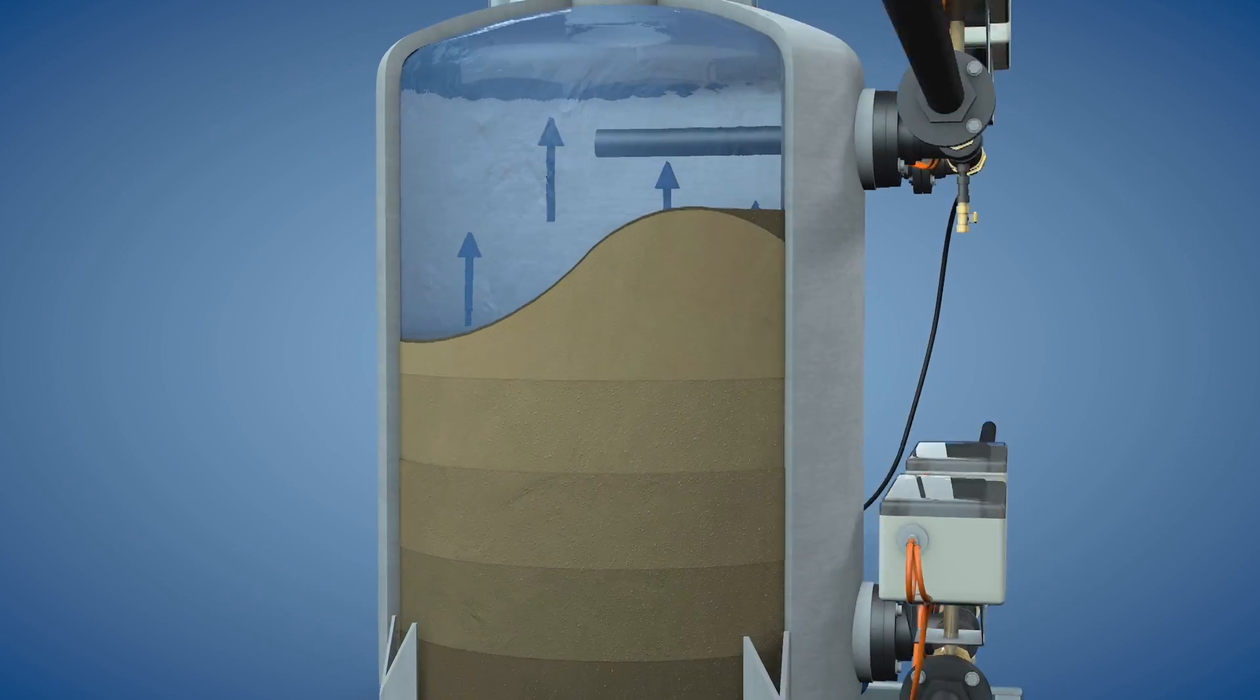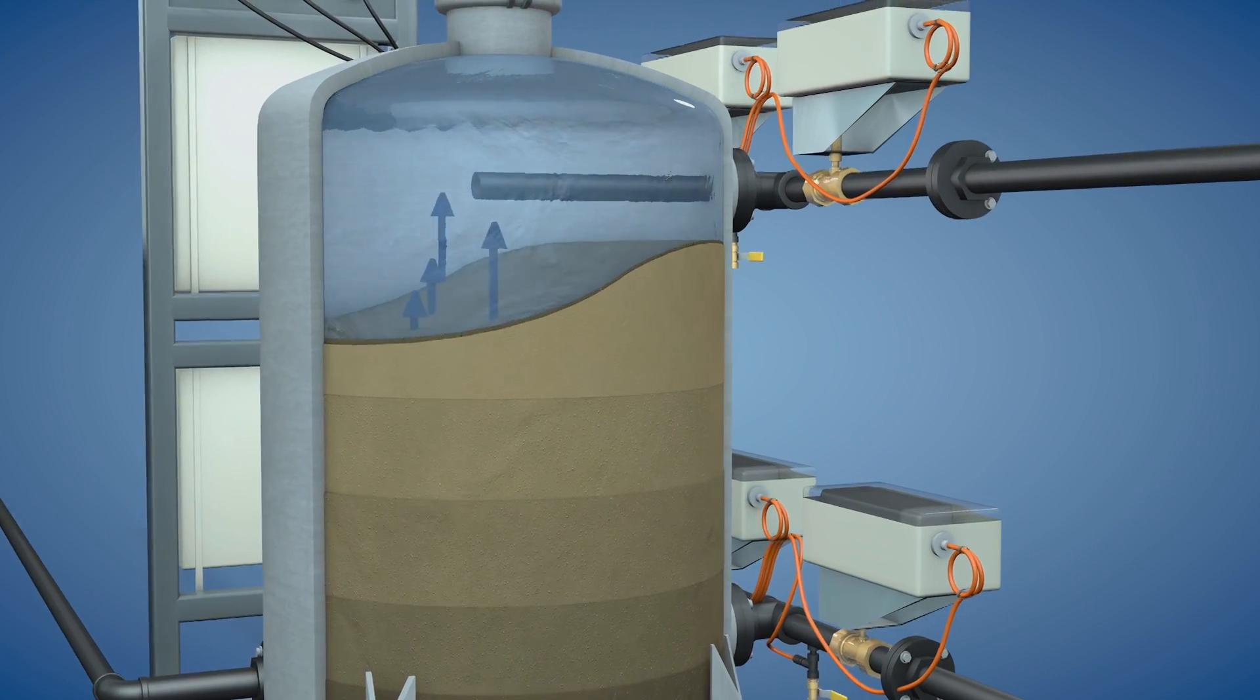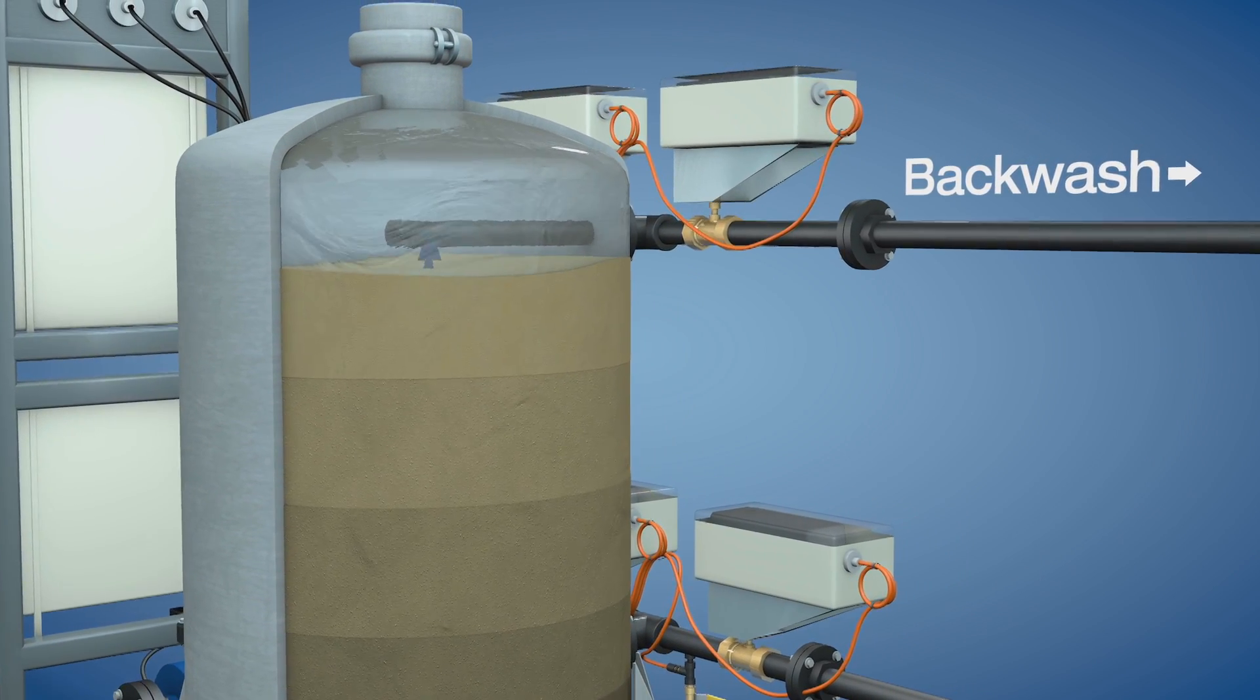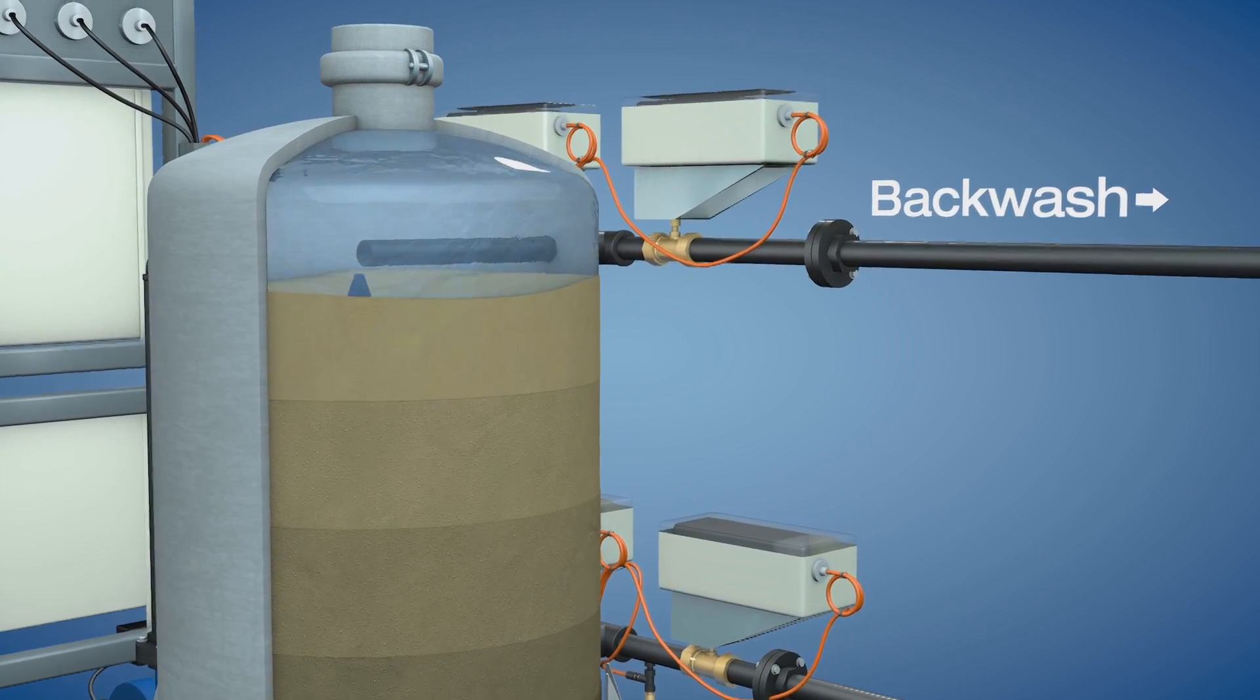By combining the backwash and rinse cycles, the Ultrasand Plus filter system saves water, but its high-efficiency filtration technology goes even further than the filter.